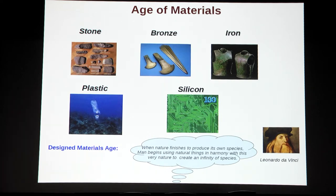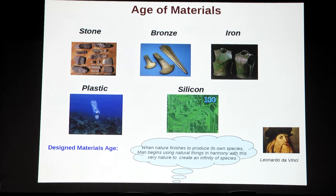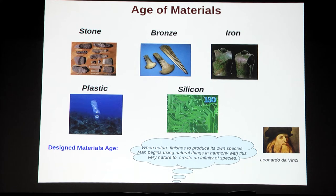The importance of materials in human civilization is so immense that different ages of civilization have been named after materials — from the Stone Age to the modern age, which is the age of silicon. Leonardo da Vinci, the Italian painter, philosopher, and scientist, said: when nature finishes producing its own species, man begins using natural things in harmony with nature to create an infinity of species. That is the design-materials age.